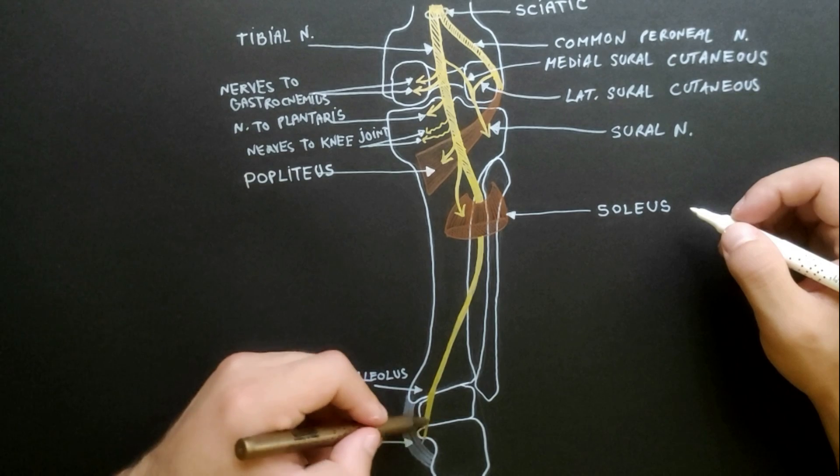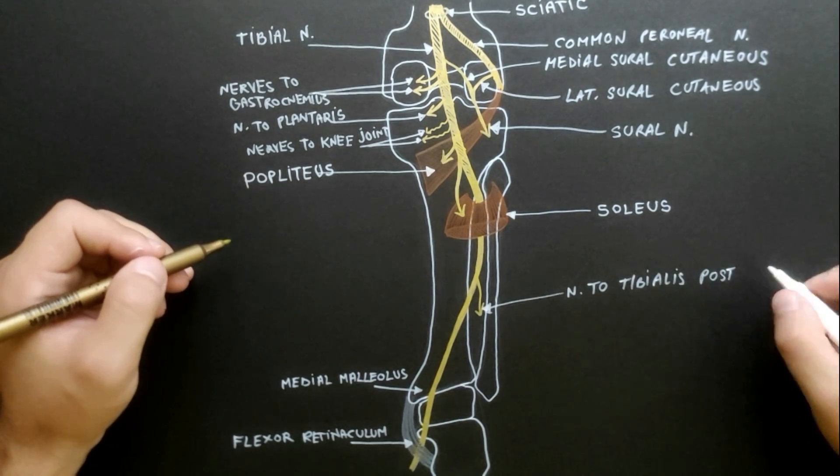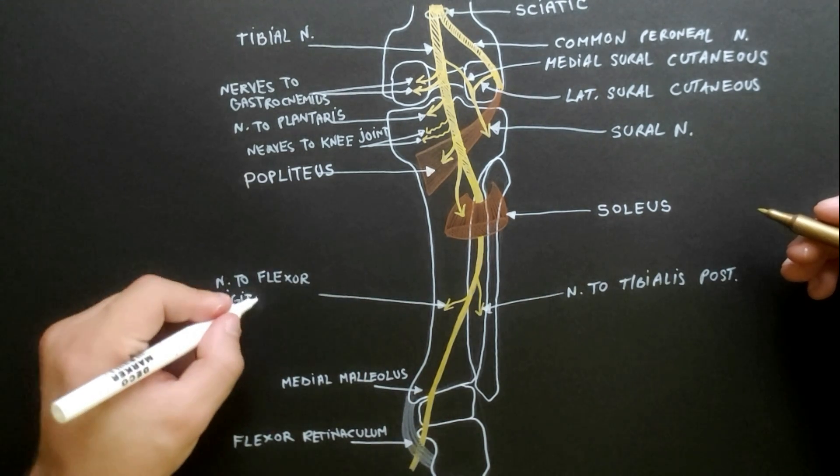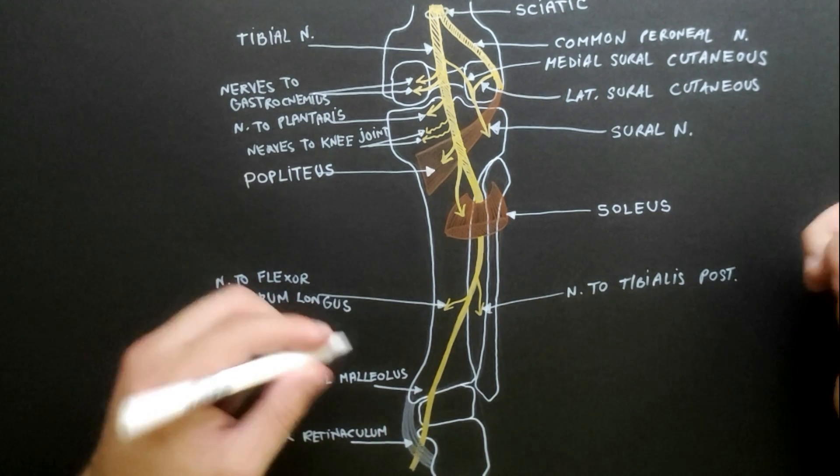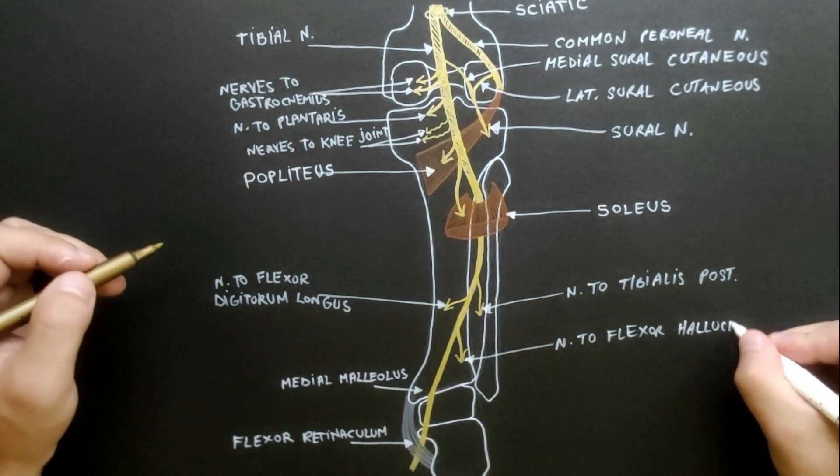At the level of the back of the leg, the tibial nerve gives nerves to tibialis posterior, flexor digitorum longus and flexor hallucis longus.